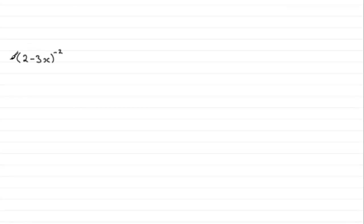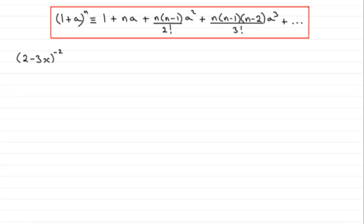So how do we do something like this? Well, I'm assuming you're familiar with the binomial expansion or binomial theorem. It goes something like this. You'll generally see this kind of formula in formula books and textbooks where we've got 1 plus a to the power n is identical to 1 plus n a plus n times n minus 1 over 2 factorial times a squared and plus and so on.